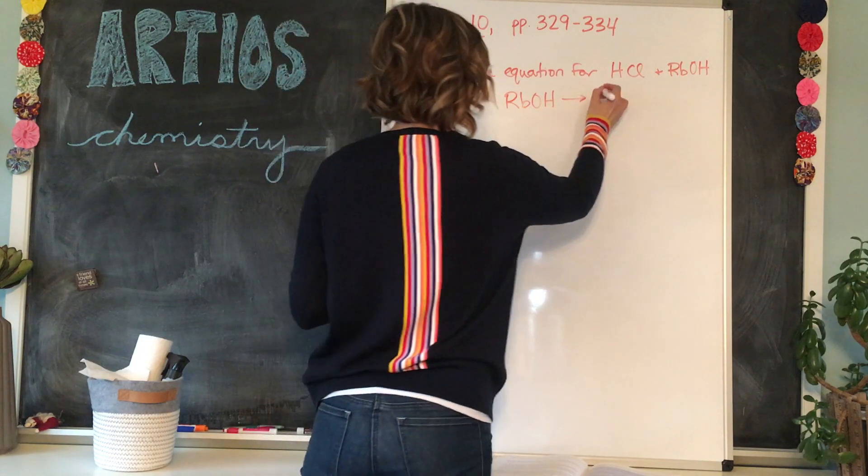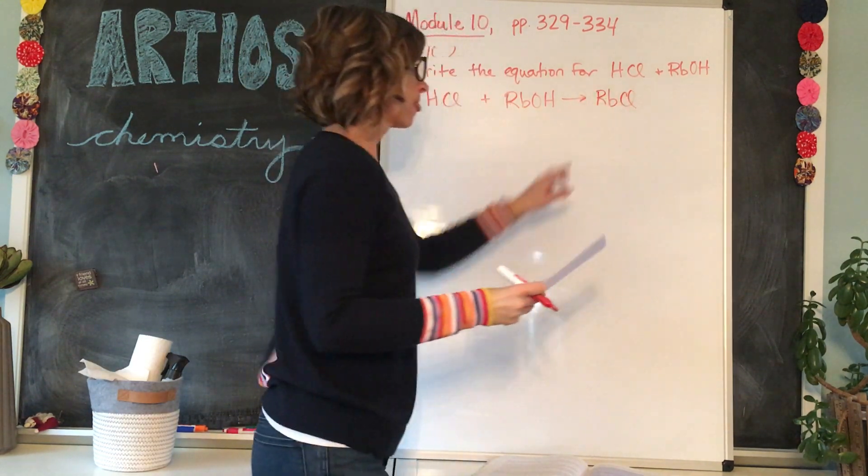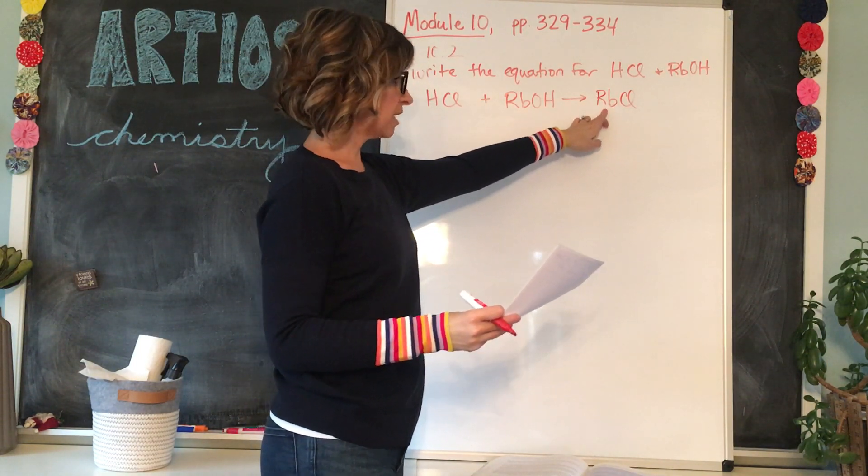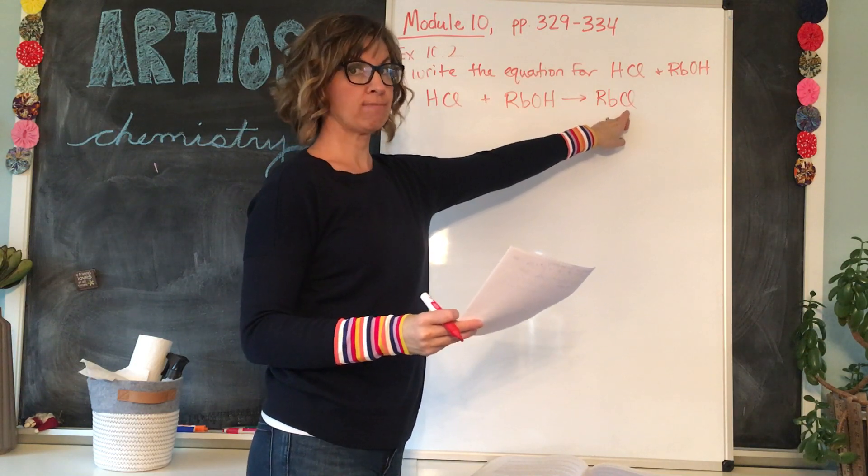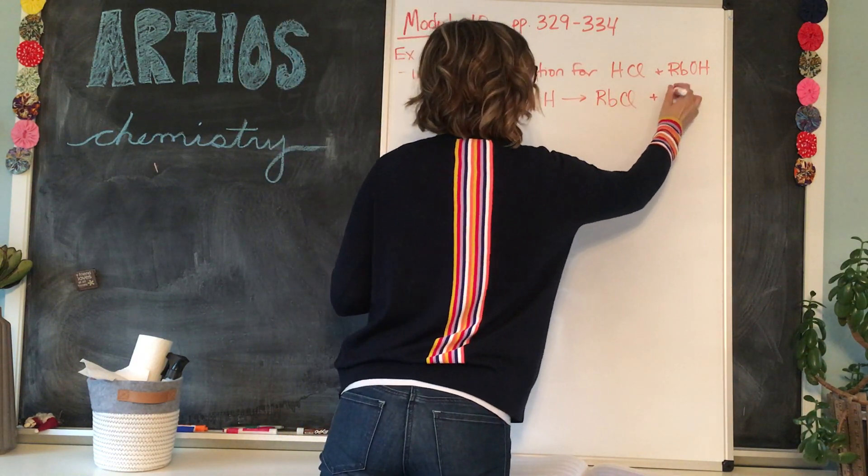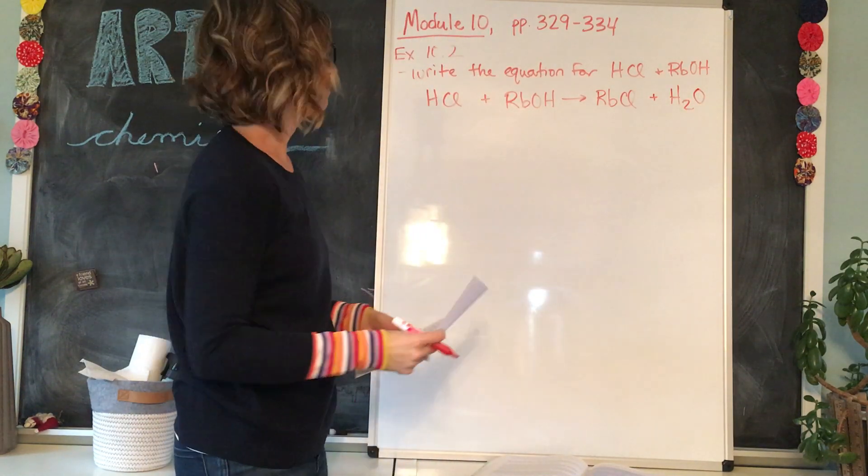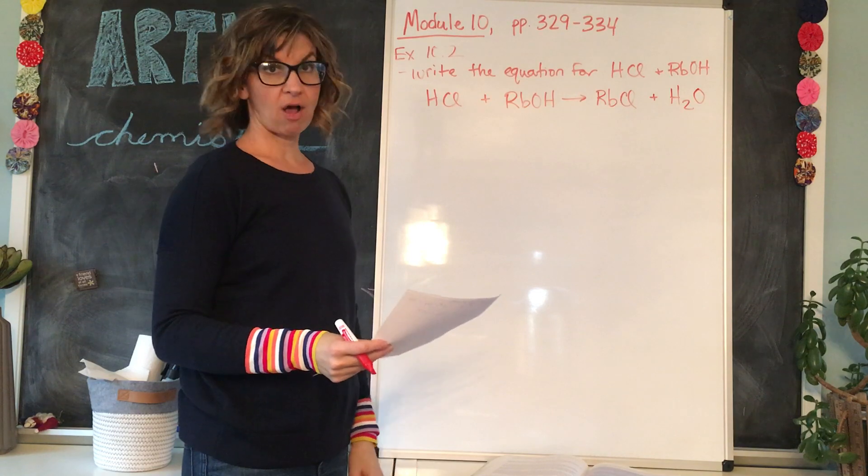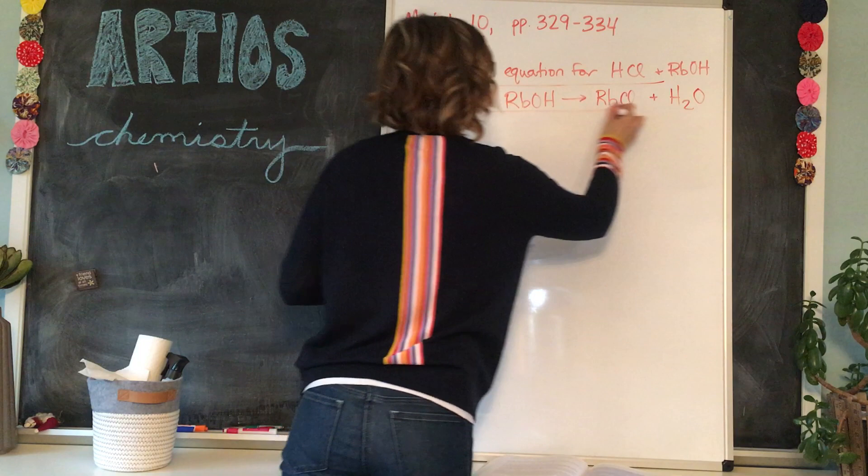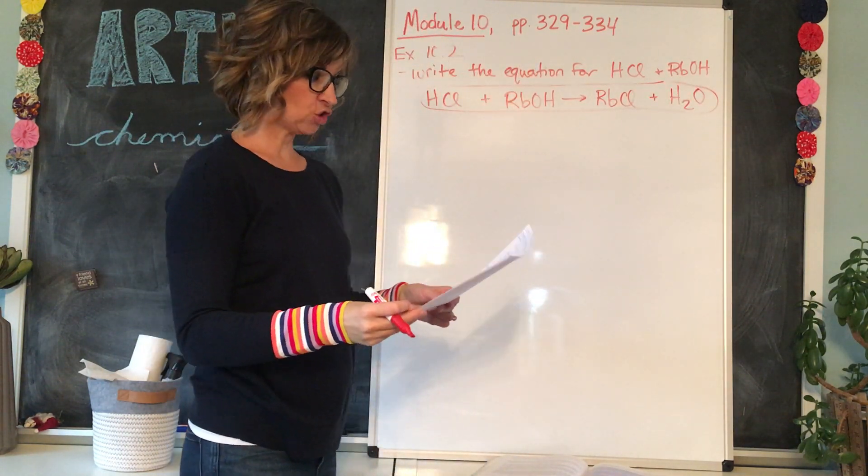So it's going to yield RbCl. And that would be the actual formula for that because Rb has a one plus charge and Cl has a one minus charge. Okay. And H2O. We'll write it out the right way this time because this is a simple one. And that one is already balanced. So that would be the answer for that. Now the second example in 10.2 is a little trickier.